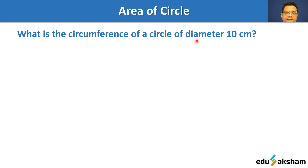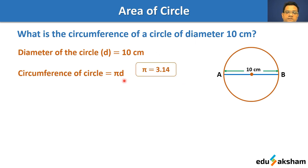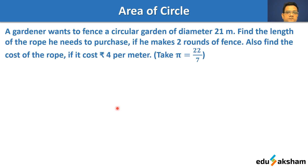Let us solve some questions. What is the circumference of a circle of diameter 10 centimeters? Circumference equals pi times d. Taking pi as 3.14, circumference equals 3.14 times 10, which gives 31.4 centimeters.